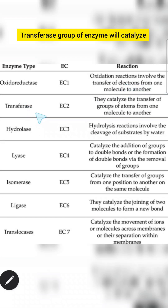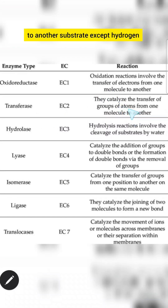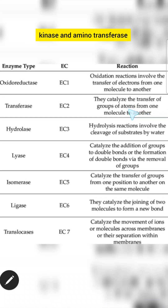The transferase group of enzymes will catalyze the transfer of a functional group from one substrate to another substrate, except hydrogen. The examples are phosphorylase, kinase, and aminotransferase.